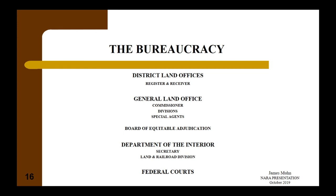Like any good bureaucracy, the Land Department had a flow that people had to follow. Homesteaders first dealt with the register and receiver in the district land offices, where most people only had to go. Entries and final proofs were made and accepted there. Once approved, a homestead went to the General Land Office where it was reviewed and in most cases went to patent. If contested for fraud or other reasons, it could be appealed to the Secretary of the Interior, and in very few cases, to the federal courts.